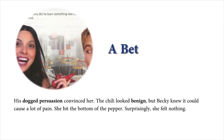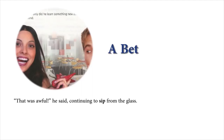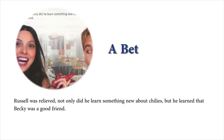'My turn,' said Russell. He bit the middle of the chili. Immediately, he seemed to be in distress. He gasped, and his face alternated between brave and pained expressions. He experienced an overdose of spice. He was on the verge of tears and finally let out a horrible cry. 'Take this,' said Becky, handing him her drink. 'That was awful,' he said, continuing to sip from the glass. That night, Becky researched chilis. The next day, she said in an apologetic voice, 'I read that the hot part of chilis is in the middle, where the seeds are. I'm sorry. I feel like I cheated by going first.' Russell was relieved. Not only did he learn something new about chilis, but he learned that Becky was a good friend.